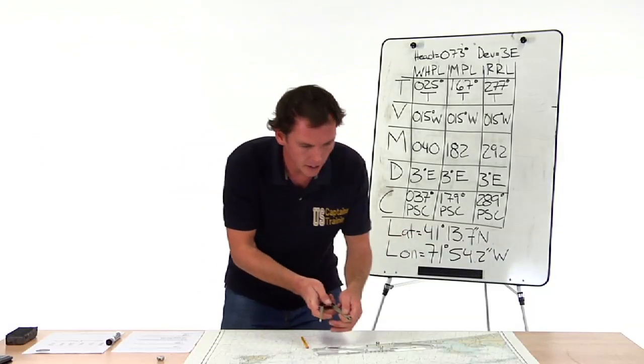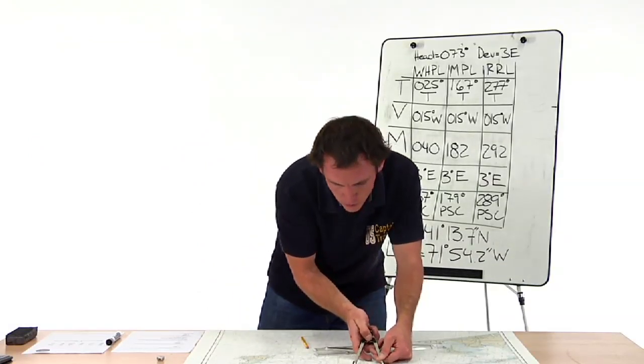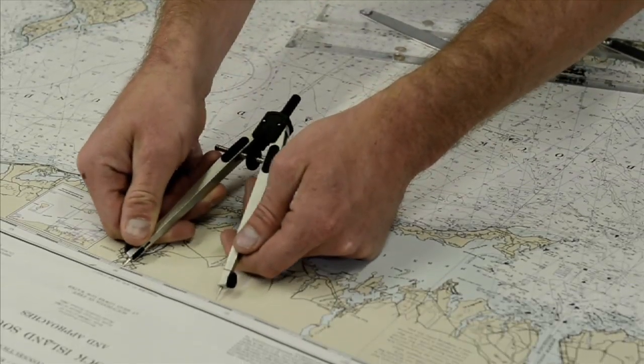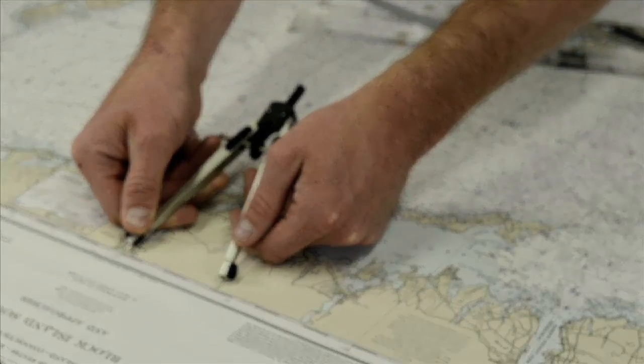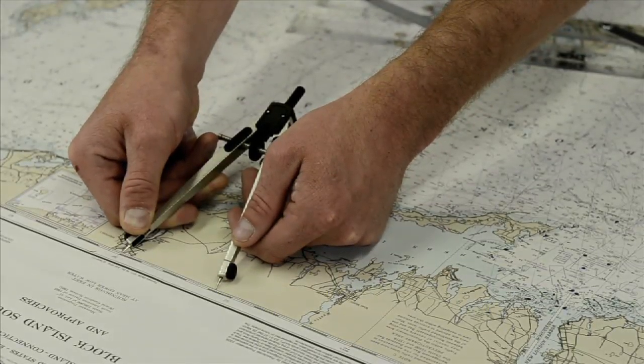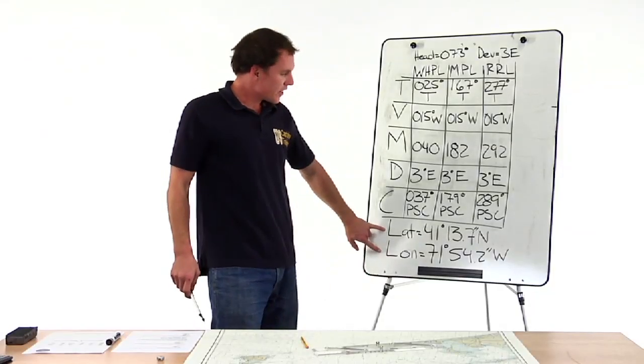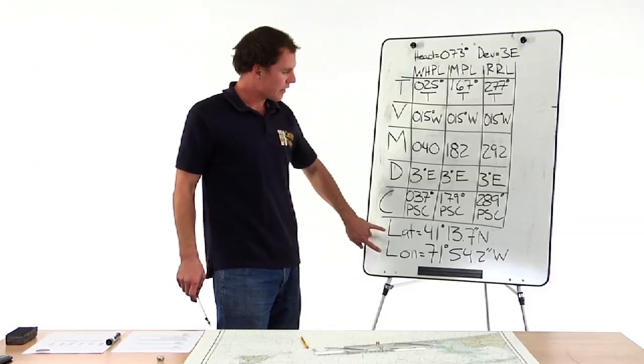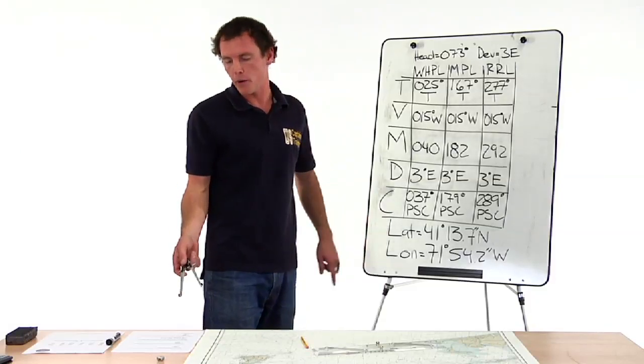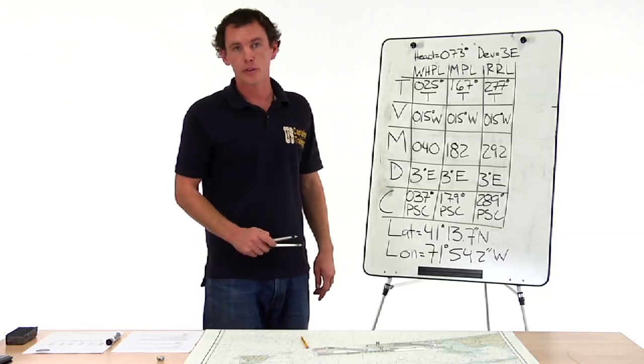Then we take our longitude from our point over to a meridian. We walk it up and we get 71, 54.2. This is our answer. We compare this answer to the answers under the problem and we choose the closest one. And that's how we do a three point fix.